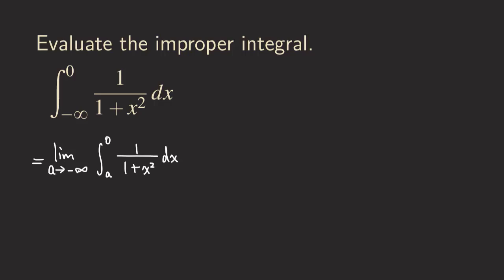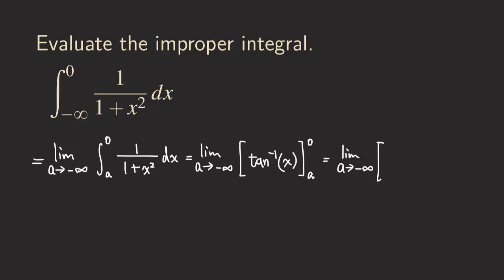Integrating 1 over (1 + x²), we get arctangent — tangent inverse of x — evaluated from a to 0. Plugging in, we get tangent inverse of 0 minus tangent inverse of a.